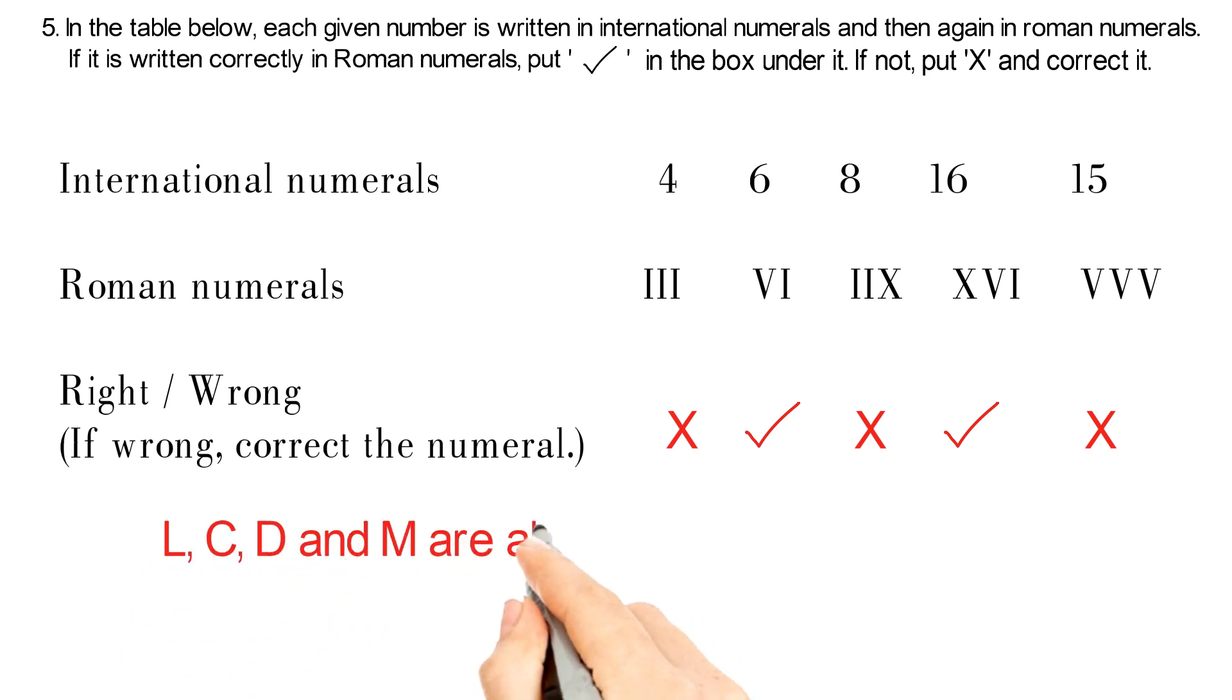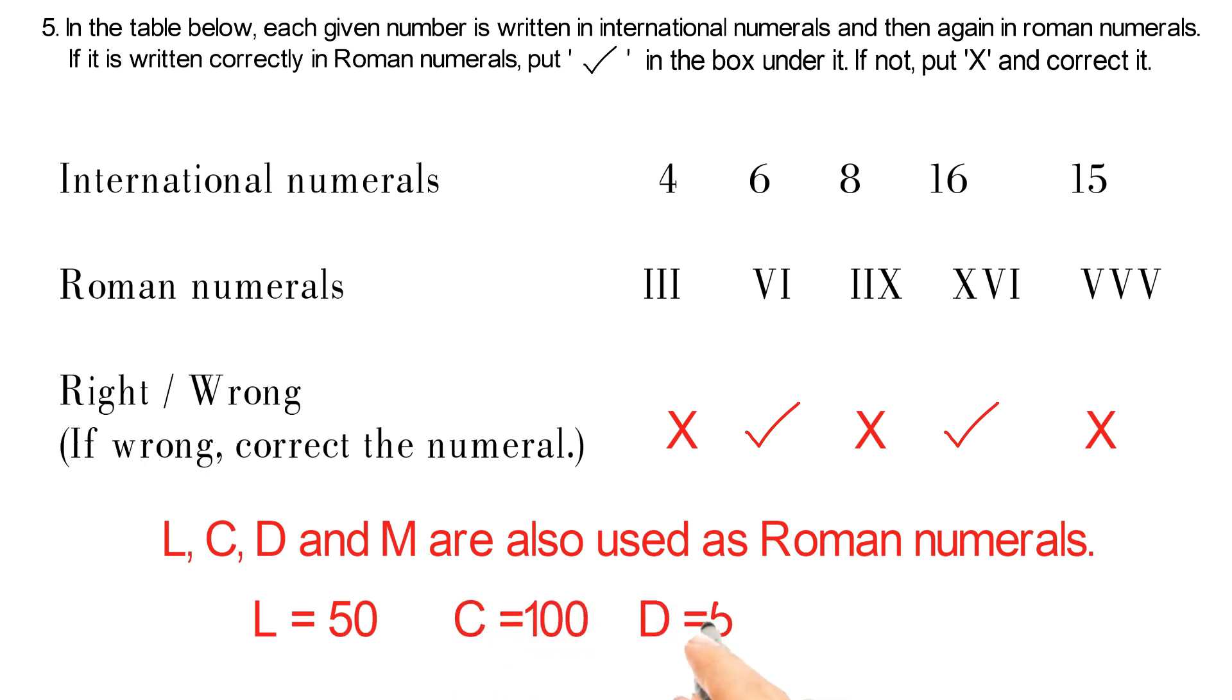L, C, D and M are also used as Roman Numerals. Here, L equals 50, C 100, D means 500, and M is used for 1000.